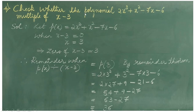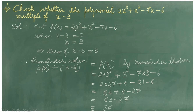Now, let's check whether the polynomial 2x cube plus x square minus 7x minus 6 is a multiple of x minus 3. Let p of x be equal to 2x cube plus x square minus 7x minus 6. When x minus 3 is equal to 0, solving this equation, x will be equal to 3. This implies the zero of x minus 3 is equal to 3. Therefore, the remainder when p of x is divided by x minus 3 will be equal to p of 3, by remainder theorem. Now, substituting 3 in place of x in p of x: